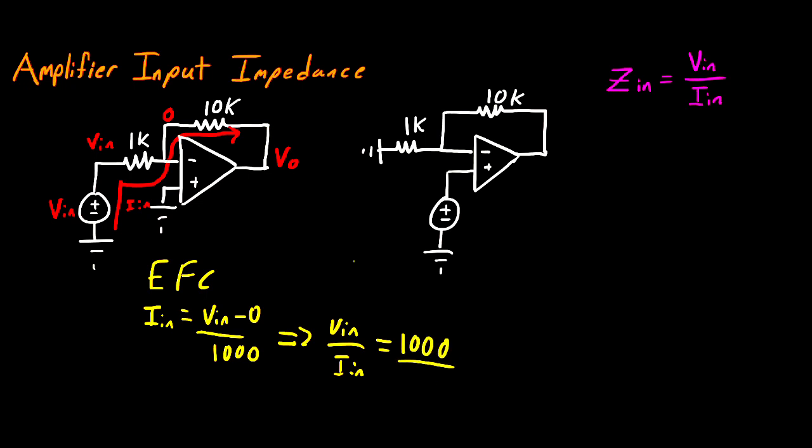So for an inverting op-amp like this, the input resistance that you see is just this first resistor. Now let's look at the non-inverting amplifier we have on the right. So let's do the same thing, and we'll call this V in. And we have a current coming in through that voltage source. We'll call this I in. Now before we get any further in labeling our circuit, something interesting should jump out at you.